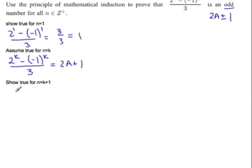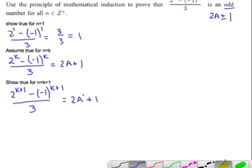Now show true for n equals k plus 1. So we have 2^(k+1) minus (-1)^(k+1) all over 3. This is our goal here. That should end up being 2a' plus 1, plus or minus 1.